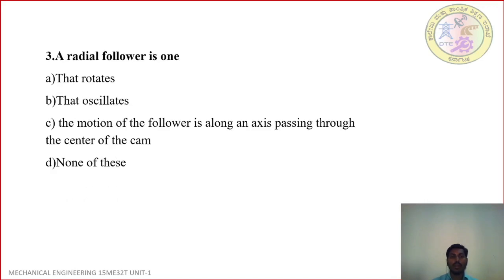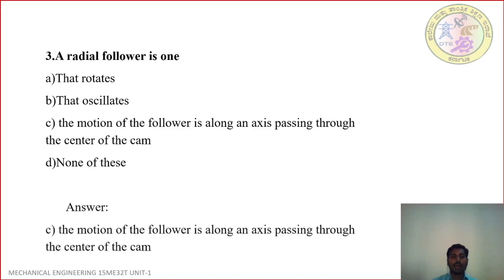Question 3: A radial follower is one — A: That rotates, B: That oscillates, C: The motion of the follower is along an axis passing through the center of the CAM, D: None of these. Correct answer is C: the motion of the follower is along an axis passing through the center of the CAM.